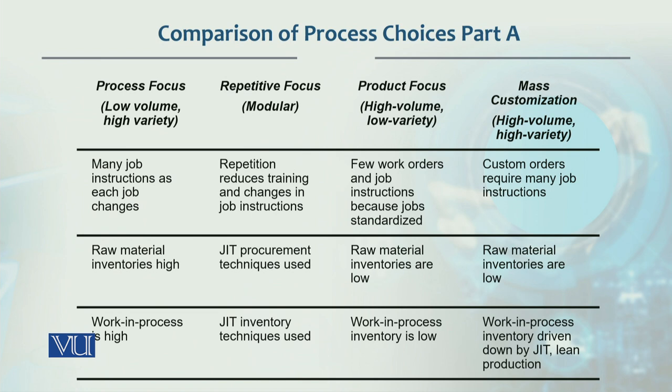Regarding lot size in process focus: imagine a lot size of 100, where one component takes one minute per operation at one work center — that means you wait 100 minutes for the batch to complete before moving on. This shows that work in process is at its maximum in process focus due to waiting time. In repetitive focus, because just-in-time inventory is used, work in process is reduced significantly.